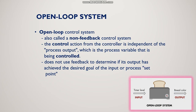Now we are going to see about open loop system. Open loop system is otherwise called a non-feedback control system. Feedback means if you are monitoring using a sensor or transducer, then there is a feedback. But in an open loop system, no sensor or transducer is used — this is why we call it a non-feedback system. The control action from the controller is independent of the process output. There is no feedback to determine if the output has achieved the desired goal. For example, the home lighting system is an open loop system if there is no sensor.